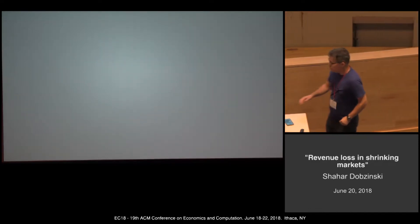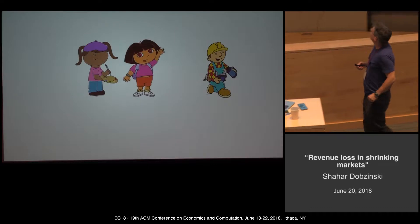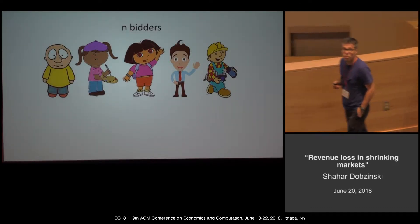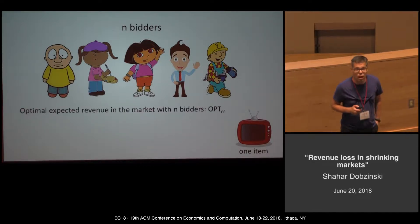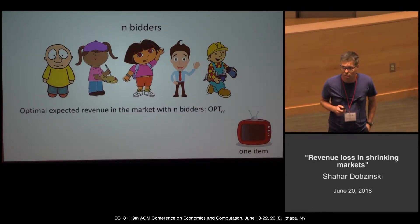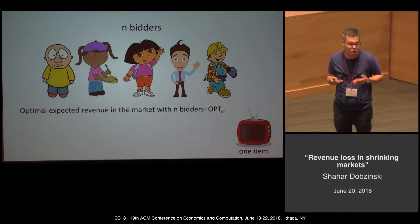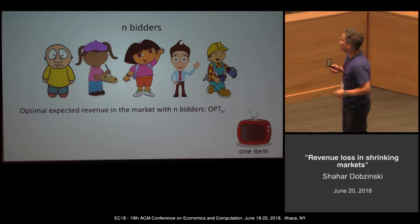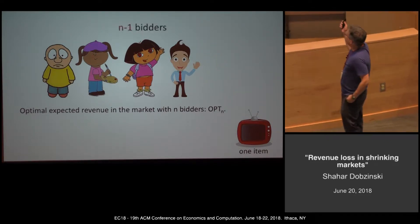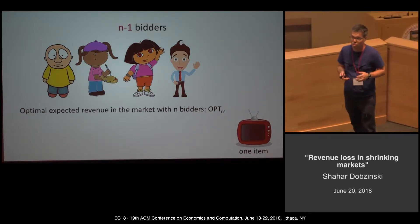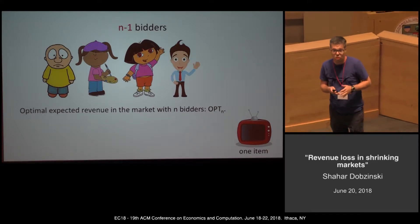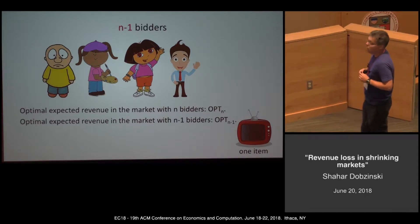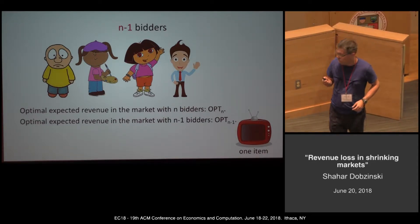We're going to discuss markets with n bidders and one item for sale. We denote by opt(n) the optimal revenue of a truthful mechanism achievable in this n-bidder market. We then think of a situation where the market gets smaller — one bidder leaves — and denote by opt(n-1) the optimal revenue in this smaller market.